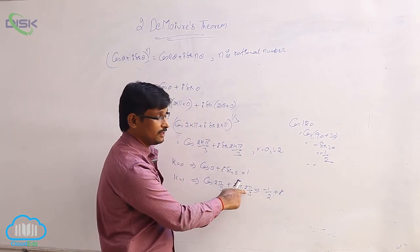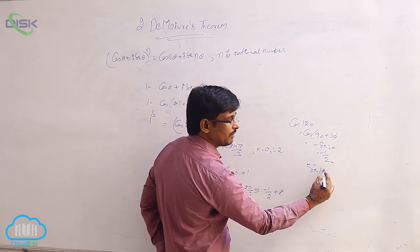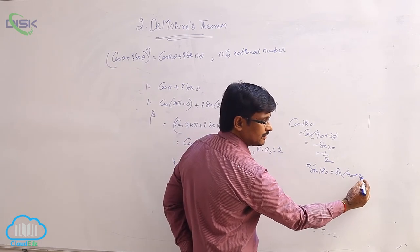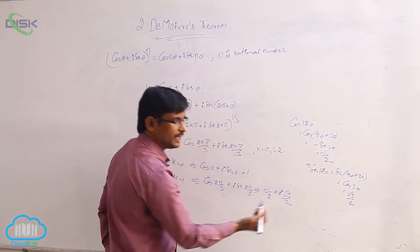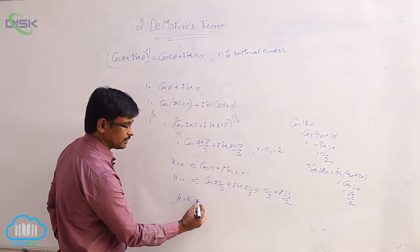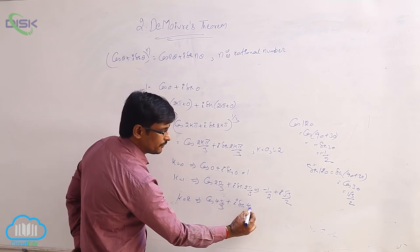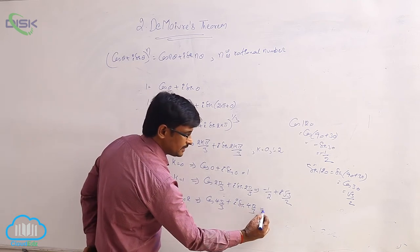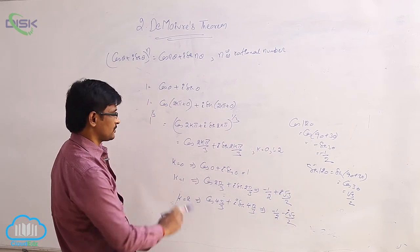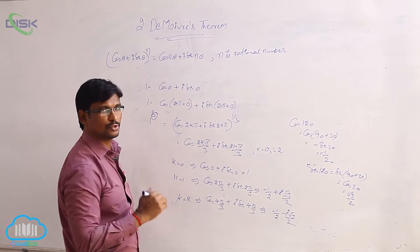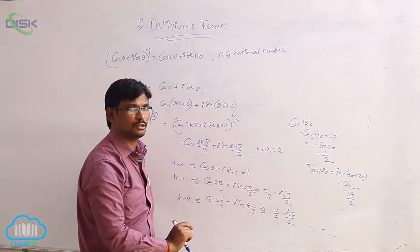For sin 120, written as sin(90+30), this equals cos 30, which is root 3 by 2. So the second root is minus 1/2 plus i root 3 by 2. For k equal to 2, we get cos(4pi/3) plus i sin(4pi/3), which simplifies to minus 1/2 minus i root 3 by 2. So the three cube roots of unity are: 1, minus 1/2 plus i root 3 by 2, and minus 1/2 minus i root 3 by 2.